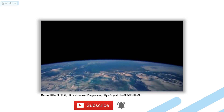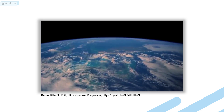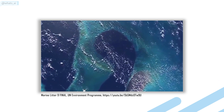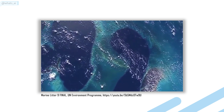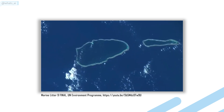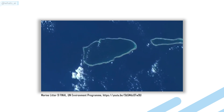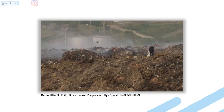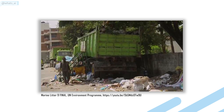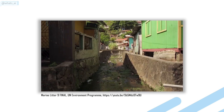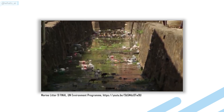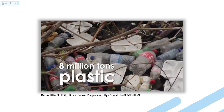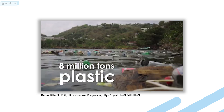We live on a blue planet. Over 70% of Earth is covered by sea. From space, our ocean appears pristine clean. Unfortunately, it's not. Because of poorly controlled waste sites, illegal dumping, and mishandled waste from population centers, tourism, industrial and agricultural activities, an estimated 8 million metric tons of plastic waste entered the oceans.